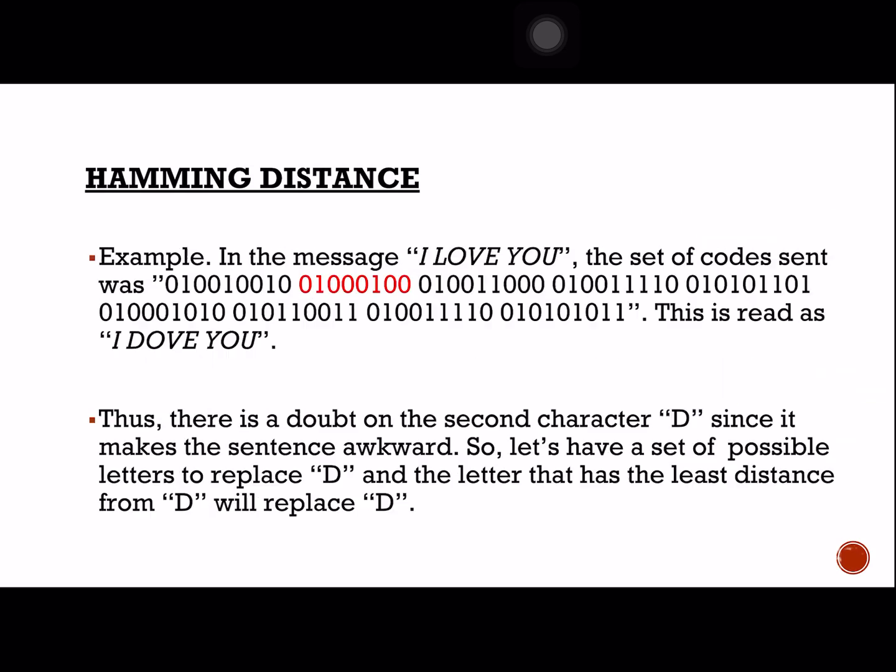Let's apply the concept of Hamming distance to a real example. Suppose the sender actually sent the message 'I love you,' but you received 'I dove you.' Hamming distance is one of the methods in coding theory that can detect and correct errors in a message. In the received message 'I dove you,' you suspect that the letter D is an error because the sentence is awkward.